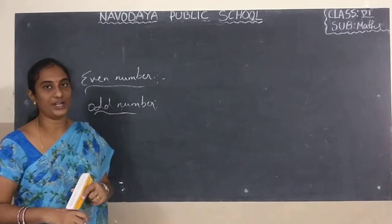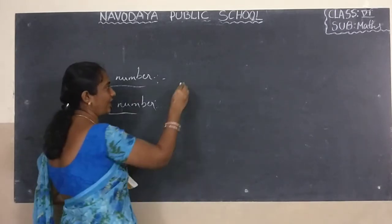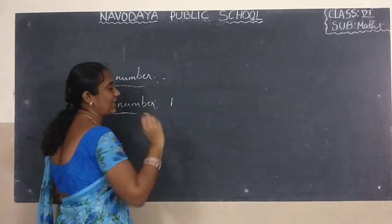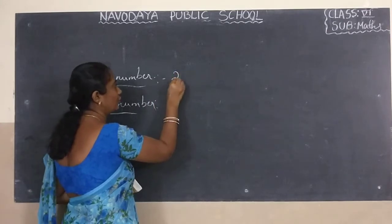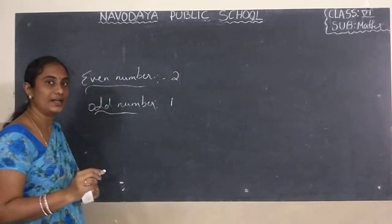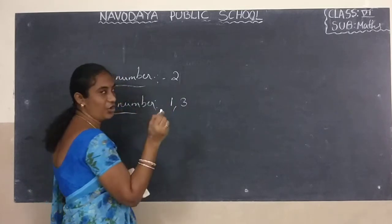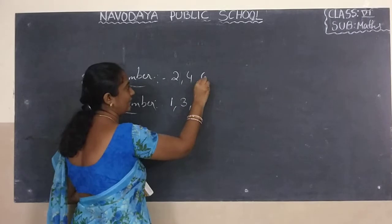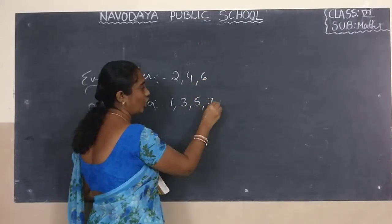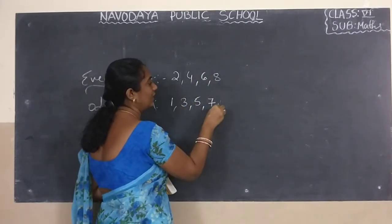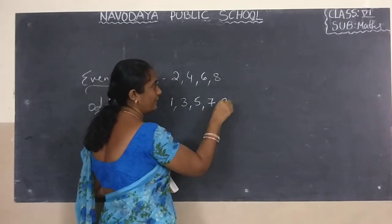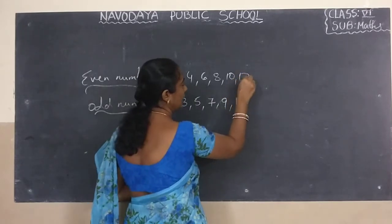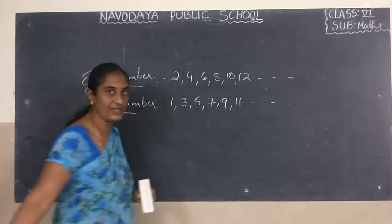Now let us see the even and odd numbers from 1 to 20. 1 is an odd number. 2 is an even number. 3 is odd. 4 is even. 5 is odd. 6 is even. 7 is odd. 8 is even. 9 is odd. 10 is even. 11 is odd. 12 is even. And so on — like this we have to write.